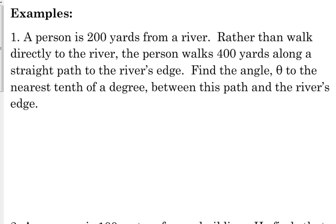So this first problem says a person is 200 yards from a river. Rather than walk directly to the river, the person walks 400 yards along a straight path to the river's edge. Find the angle theta to the nearest tenth of a degree between this path and the river's edge.